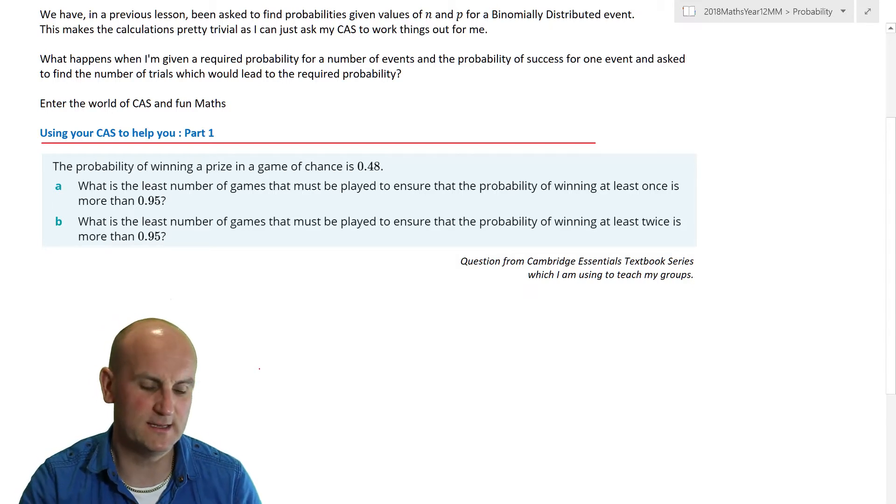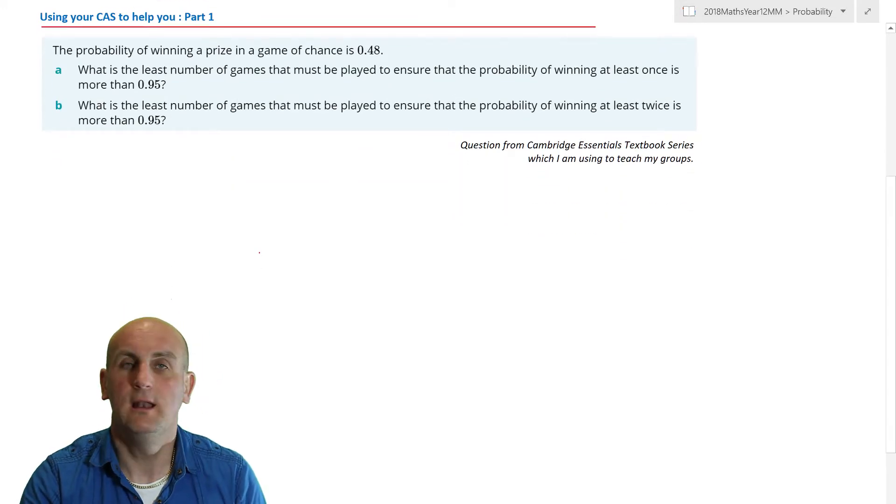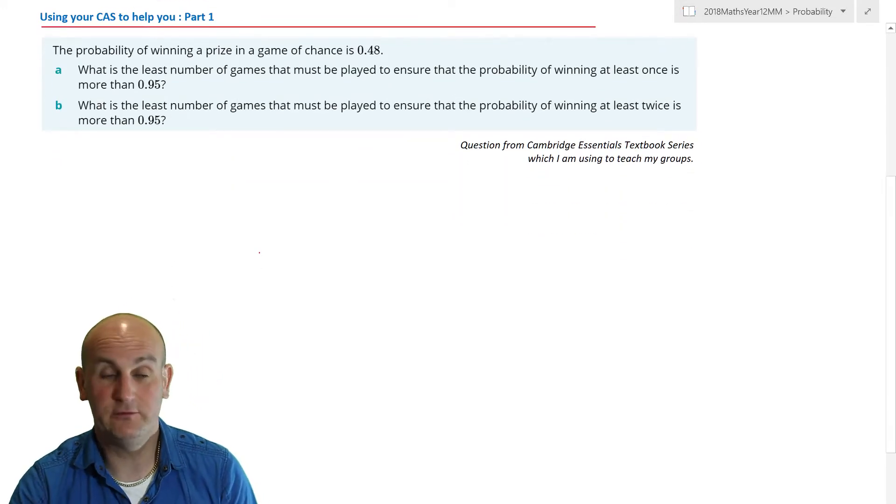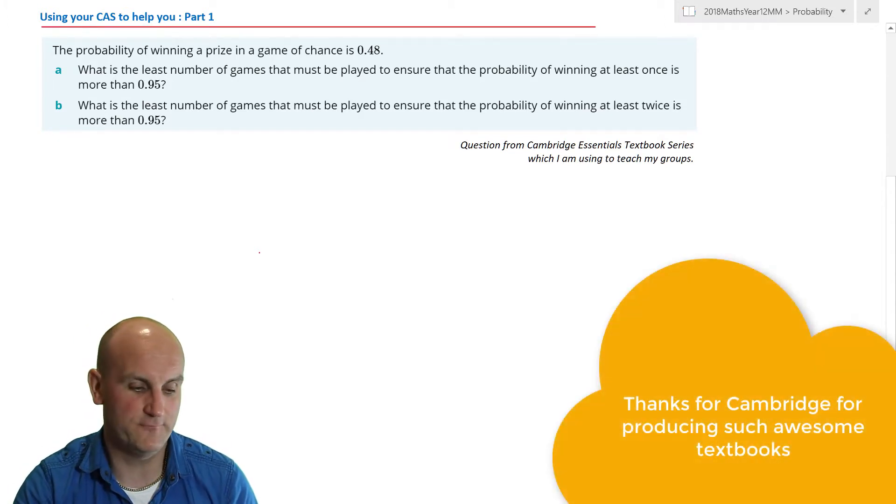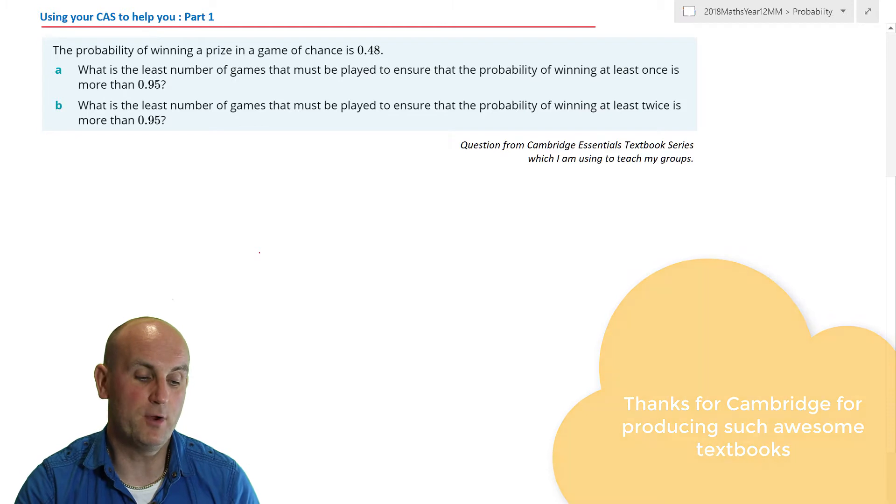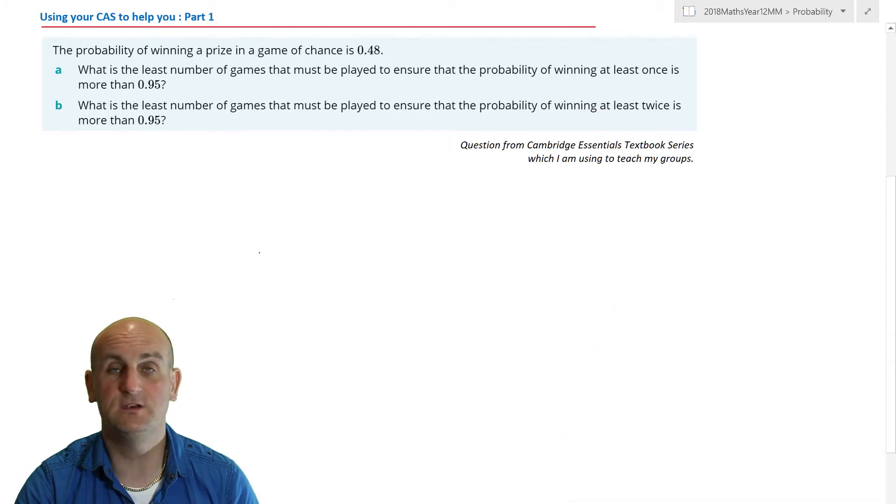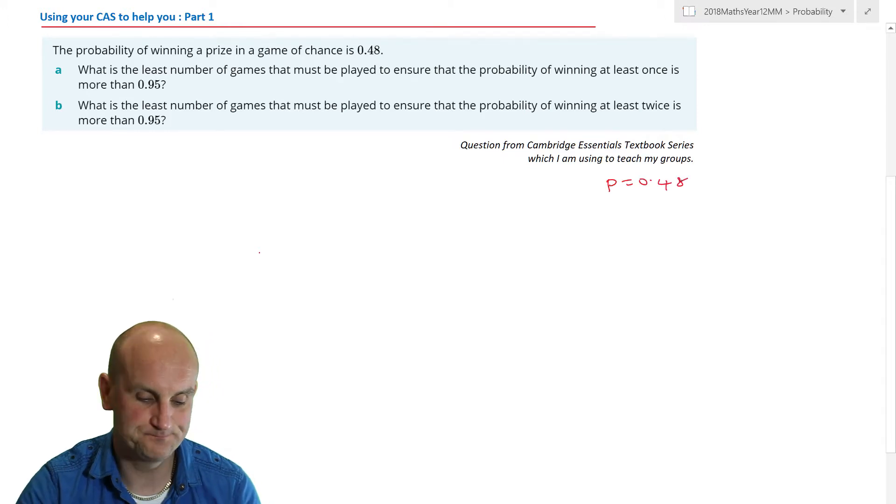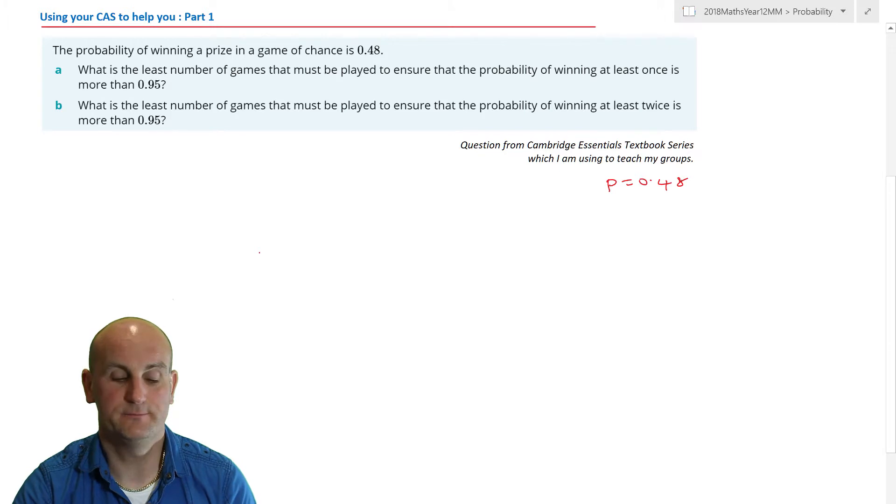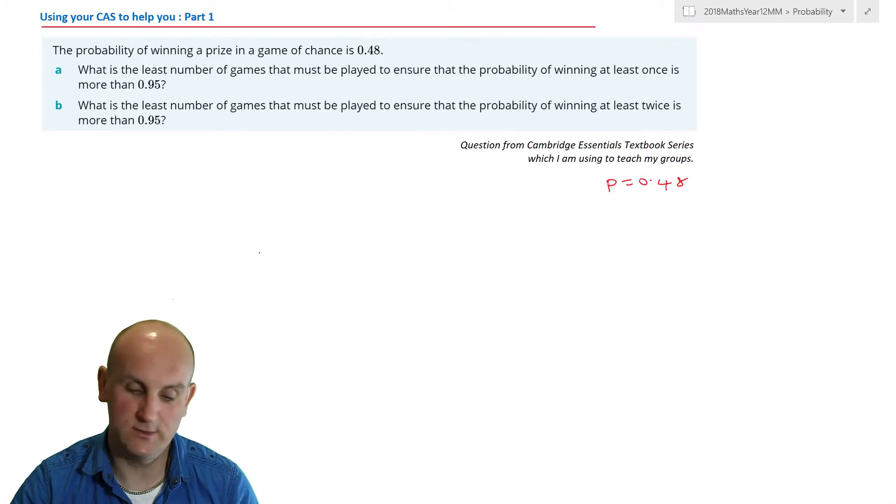The best way to explain this is with some worked examples. This one's from Cambridge Essentials - I'm using that as a textbook to teach my kids and I love it. I think it's a phenomenal textbook. So the probability of winning a prize in a game of chance is 0.48. That's now my probability of success, 0.48. Part A: What is the least number of games that must be played to ensure the probability of winning at least once is more than 0.95?